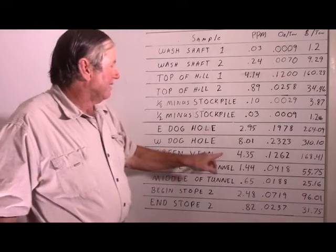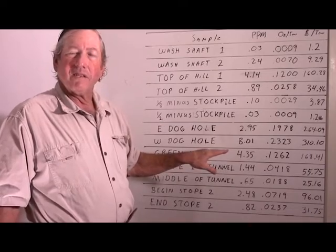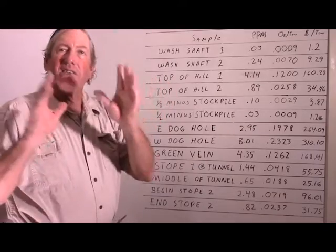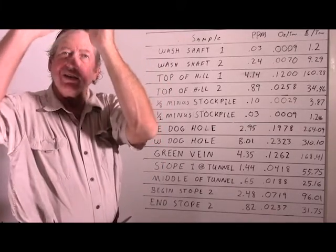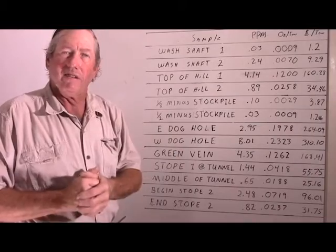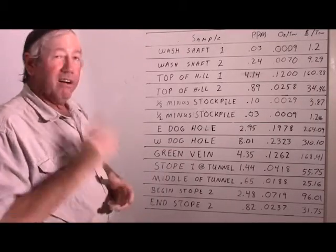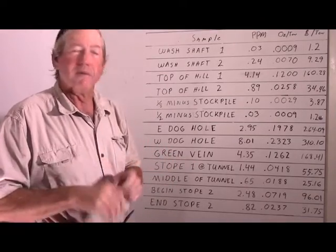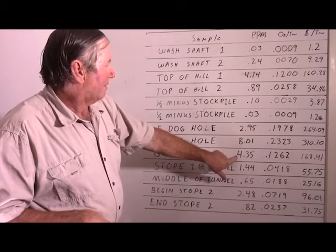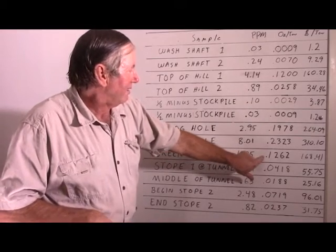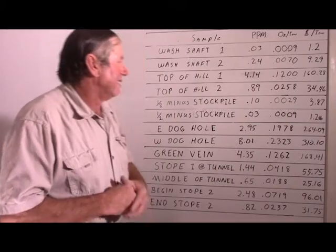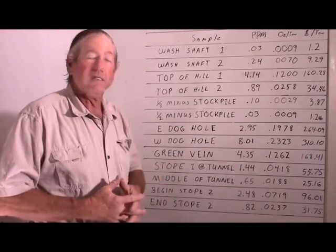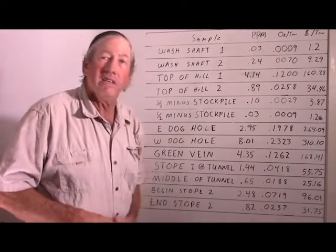Now the green vein — this was in the stoped area I was in, the one with the two stopes connected by a tunnel. There's a greenish colored vein going down the middle of the mineralized zone, so I sampled that separately. Always sample every type of mineralized structure separately. It came in at 4.35 parts per million, 0.12 ounces per ton — not bad — $168 a ton. If you had a lot of this and could move a fair tonnage at reasonable cost, this is potential ore grade.